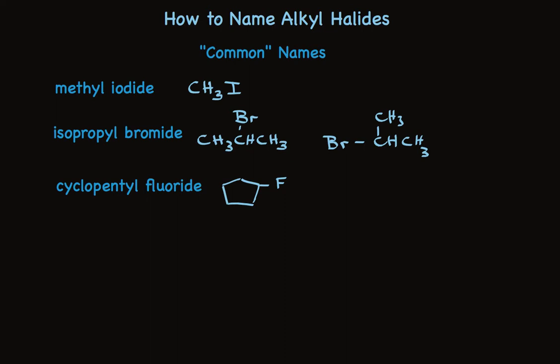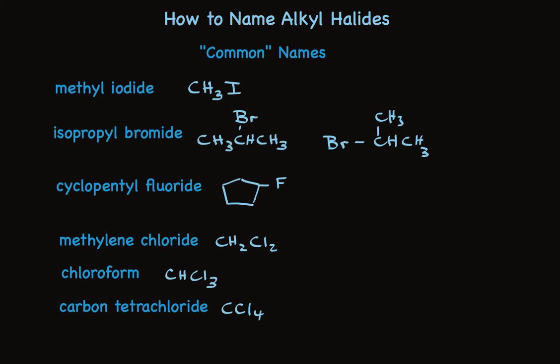Now there are three special structures that you should learn. One is the carbon that has two halogens attached — I've shown chlorine here because that's the most common. The CH2 is the methylene group, so this is called methylene chloride. It's not methylene dichloride; it's methylene chloride. When we have a carbon that has three halogens attached, it's chloroform, bromoform, or iodoform — here I've shown chlorine, so it's chloroform. And the compound with four chlorines attached is carbon tetrachloride. These three have special names and you should learn them. For the others, simply name the alkyl group and then, as a separate word, the halide that's attached.